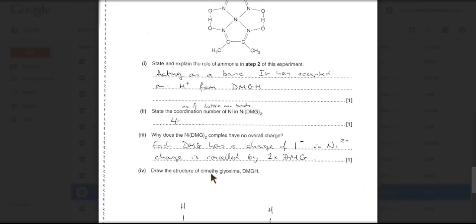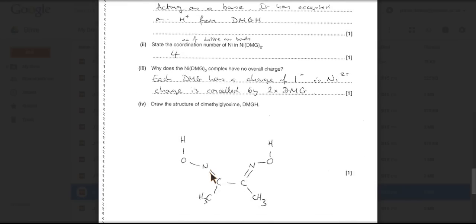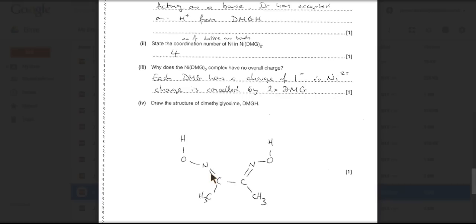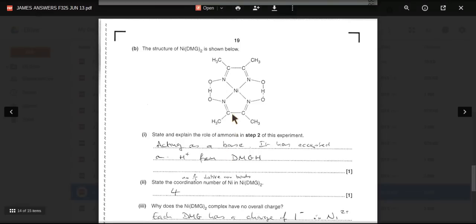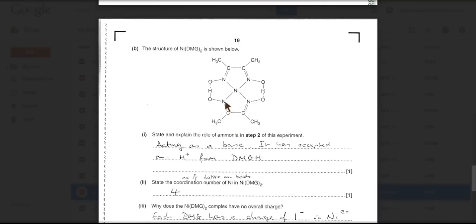And the final part of this question is draw the structure of DMGH. So we go back to the diagram there. This is NIDMG twice. So if I just use the cursor to cut this. So DMG will be. We'll cut it at that dotted line.